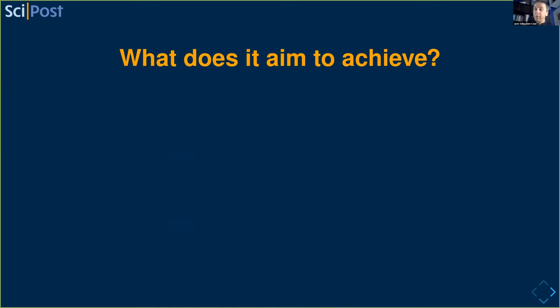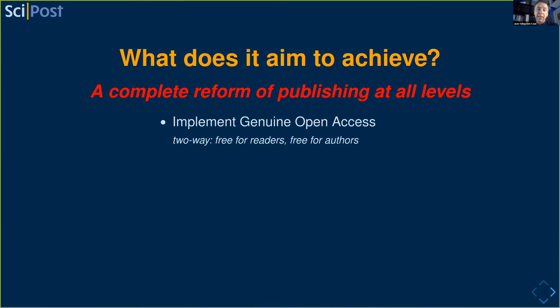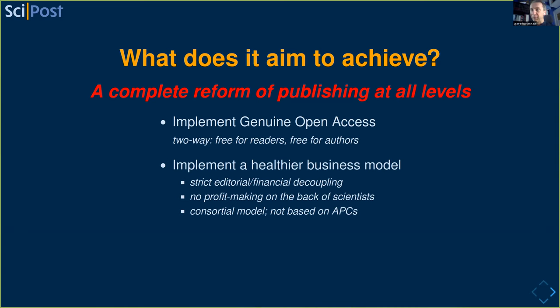What do we aim to achieve? Quite frankly, we want a rather complete reform of publishing at all levels. Preprints are working quite well for physics, but after you're done with the archive, starts the rodeo of things that don't always work well. Our idea is to implement open access in a very broad definition - what we call genuine open access - essentially opening up the machine at more or less all meaningful levels. You want to know about the finances? There's nothing hidden behind closed doors, no shenanigans with finances. We try to follow strict editorial-financial decoupling in everything we do and throw any form of profit-making out the window.